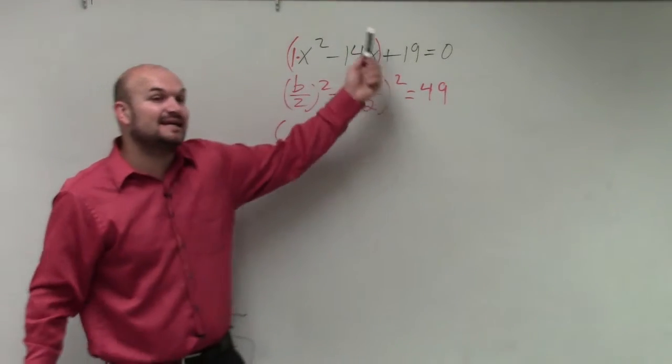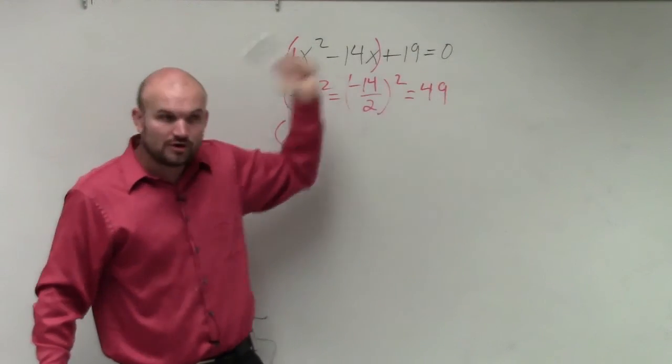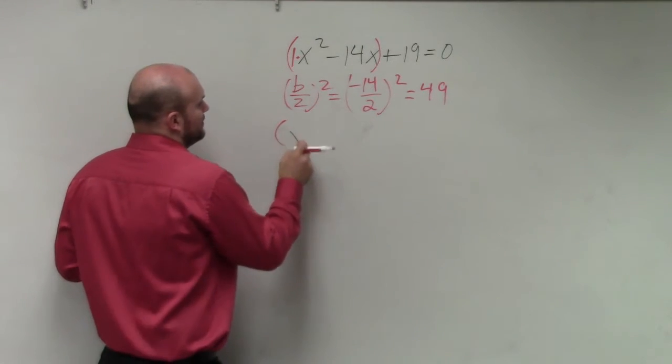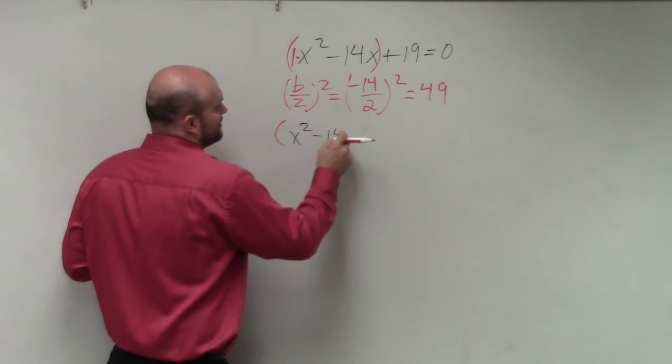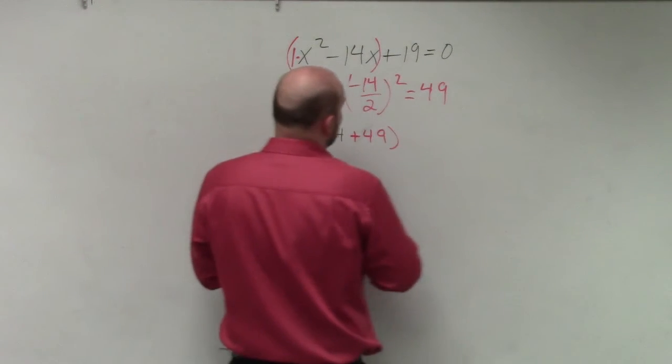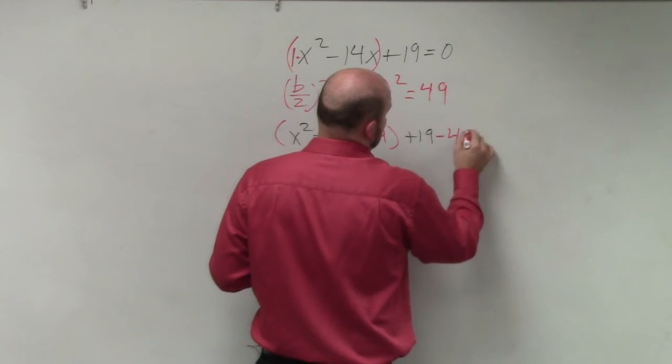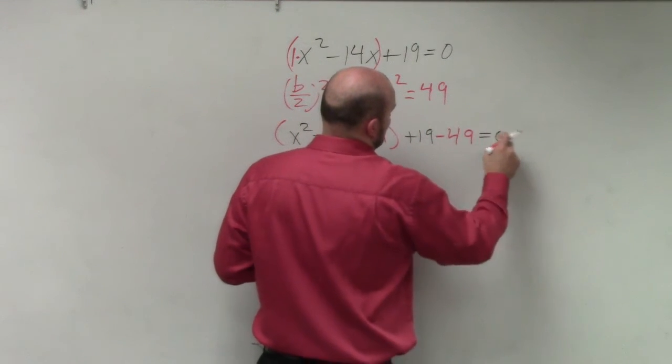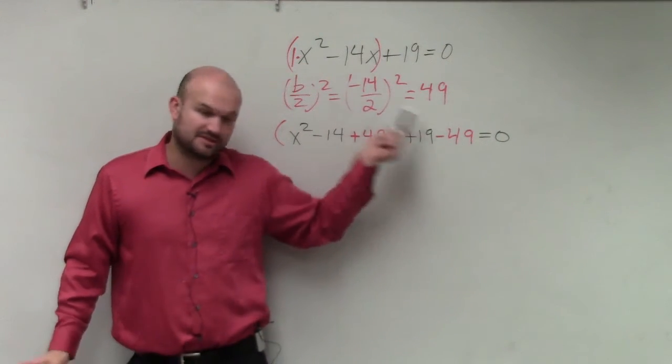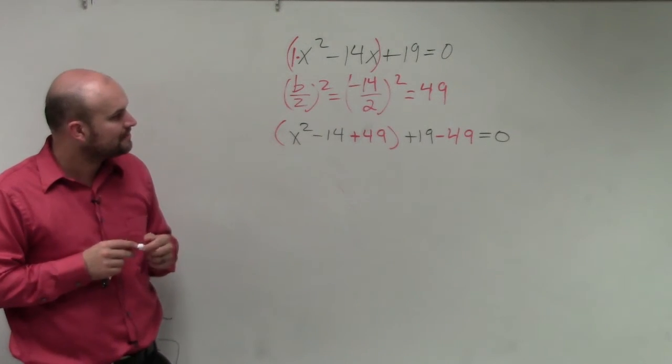So then I add 49 inside the parentheses. But since I'm adding it on the left side of the equation, I need to also subtract it on the left side of the equation. Or you could add it to both sides. Since we're solving, that's an OK method. But we didn't do that, if you remember last class period, because we were practicing writing it in vertex form. So I am just going to always do it the same way. That means whenever I add 49 onto one side, I'm going to subtract it on the same side. I'm just going to always be consistent with that, rather than doing it different ways for different types.